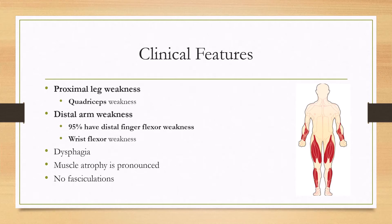In terms of the clinical features, proximal leg weakness is characteristic, especially with quadriceps weakness. Patients may not be able to get out of a chair without using their arms. What differentiates this from other myopathies is that there is distal arm weakness rather than proximal arm weakness. 95% of these patients will have distal finger flexor weakness, and many will also have wrist flexor weakness.